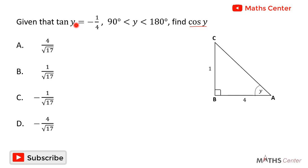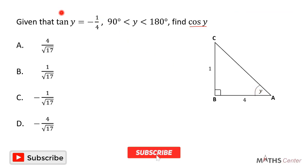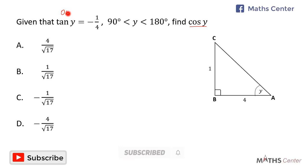We present this on a right-angle triangle ABC. Choosing angle y, we know that tan equals opposite divided by adjacent. So the opposite side is 1 and the adjacent side is 4. The negative sign is because y falls between 90 and 180 degrees. AC is the hypotenuse as it faces the right angle.